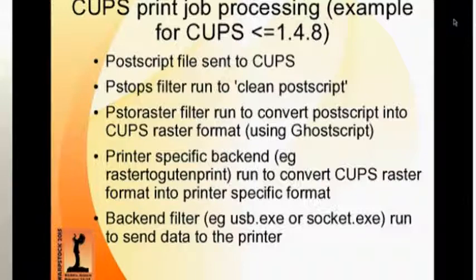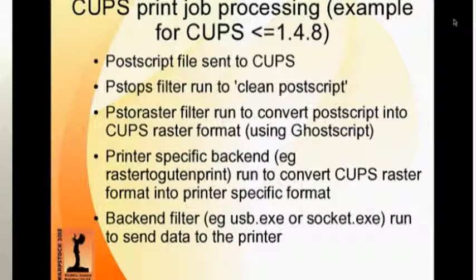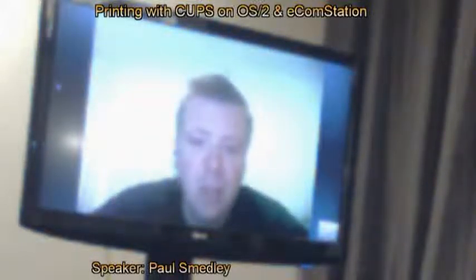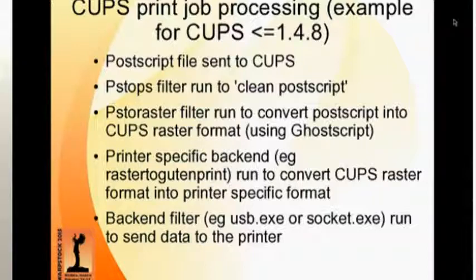Then a printer-specific filter runs — for example, rastertogutenprint for a printer supported by Gutenprint — which takes the CUPS Raster format and converts it into a format the printer can understand. This is similar to the OMNI driver on OS/2, which takes the IBM printer format and converts it to the printer-specific format. Finally, the backend filter runs — which might be USB for a USB printer, or socket for a printer using the HP JetDirect protocol.